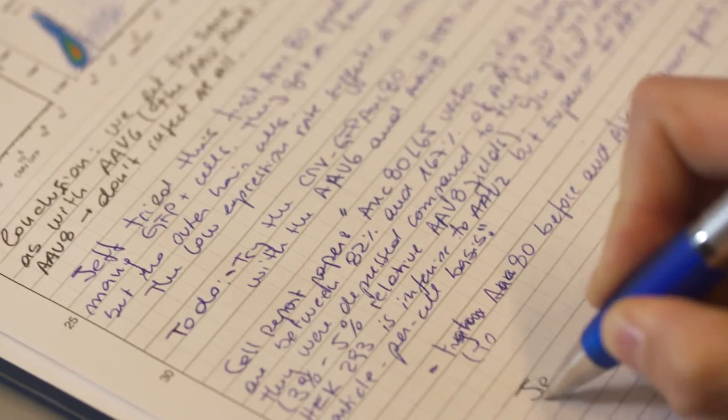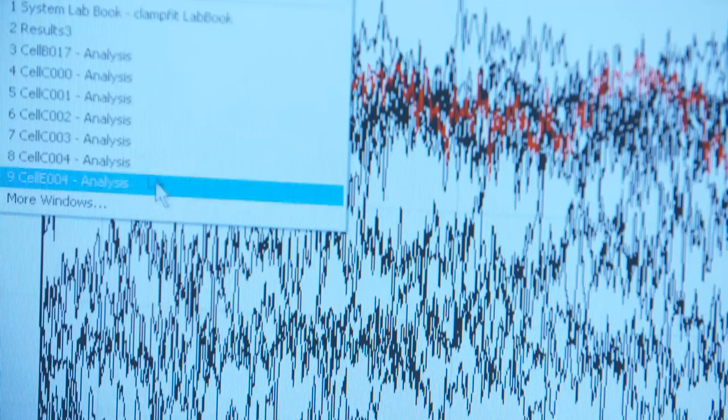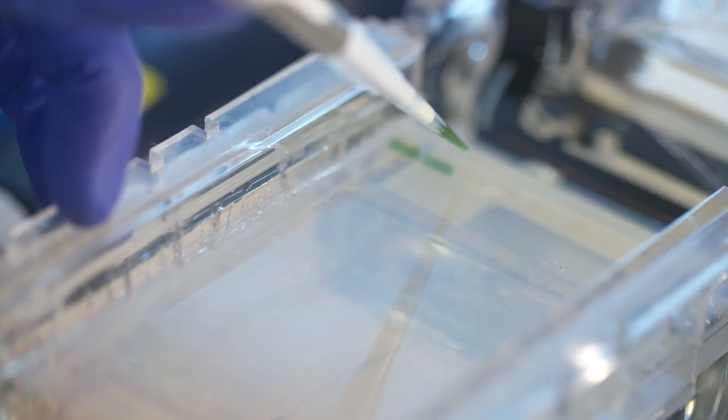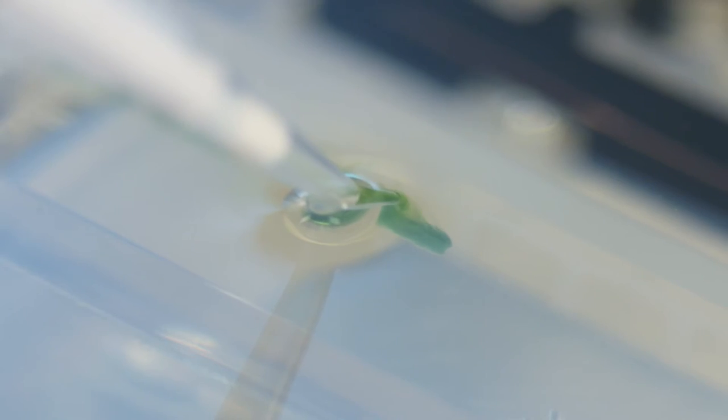During the first round of funding, we developed proof of principle data to support this approach. During the second round, we're expanding on that, trying to tackle different genes, different forms of genetic hearing loss, and improvement on the viral vectors that we use to deliver those genes.